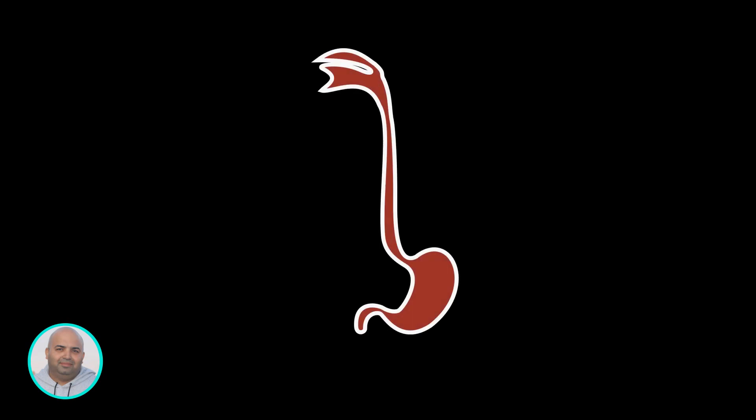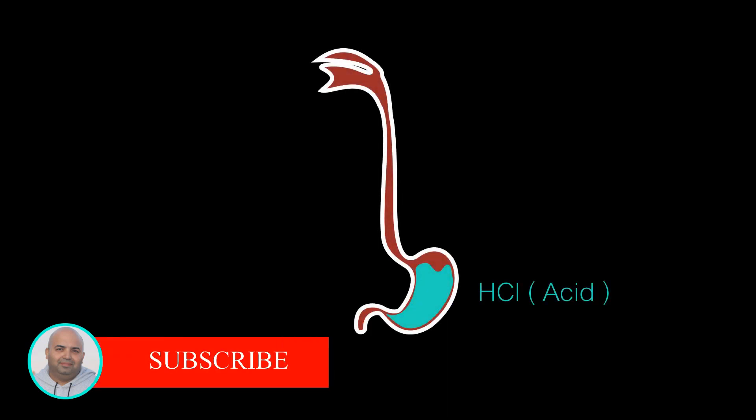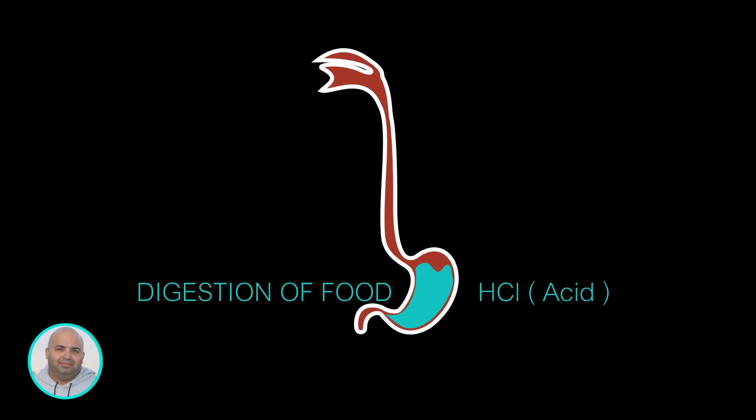Physiology of heartburn or how and what causes the heartburn. The lining of the stomach has parietal cells. These cells secrete acid or HCL in the stomach. The purpose of this acid is to aid in digestion of food.